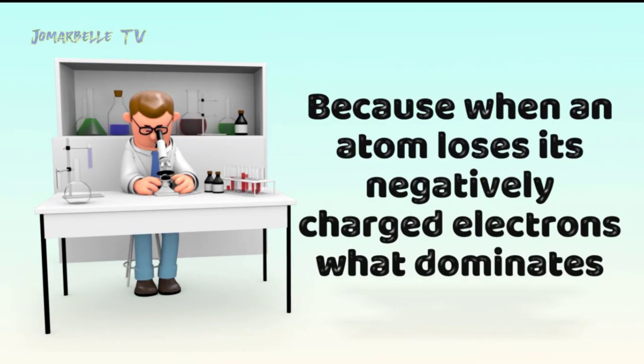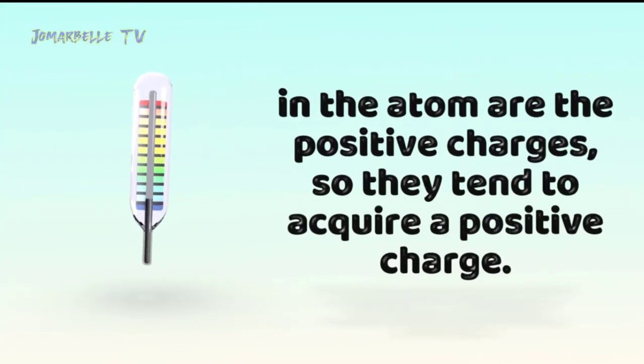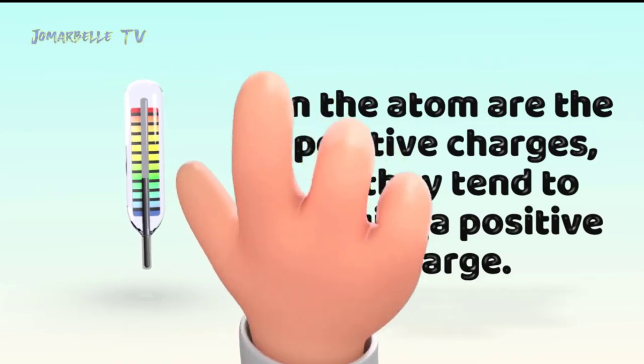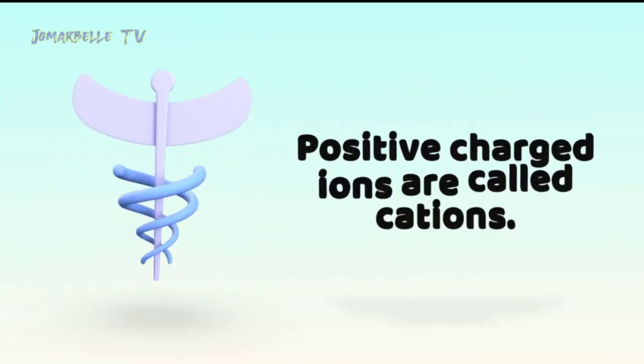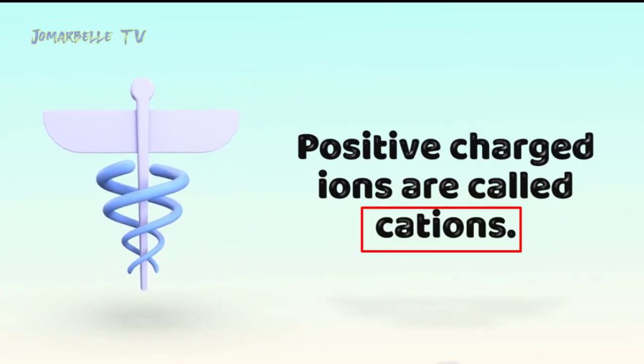Because when an atom loses its negatively charged electrons, what dominates in the atom are the positive charges. So they tend to acquire a positive charge. Positive charge ions are called cations.